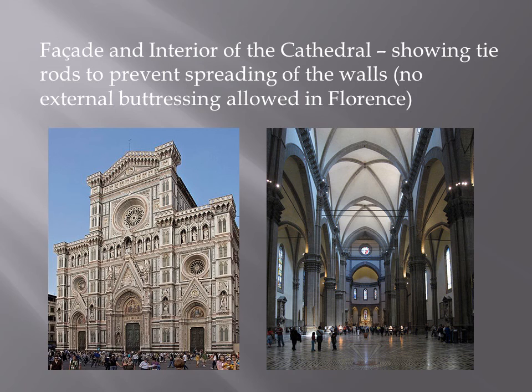Something else important: in Florence, by civic law, there was no external buttressing allowed for buildings. A buttress is an external brace, usually triangular in shape, that sits against the side of a building to keep walls from spreading out. The Cathedral Notre Dame in Paris is an example of a cathedral with external buttressing — but that was not allowed in Florence. That's one reason why internal rods and chaining were required on the main part of the building, not even mentioning the dome.